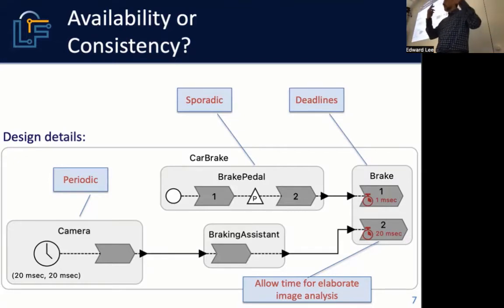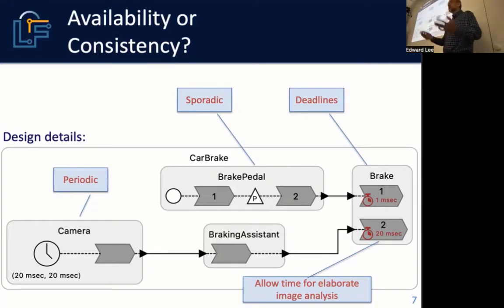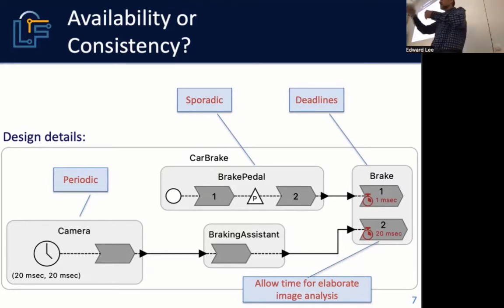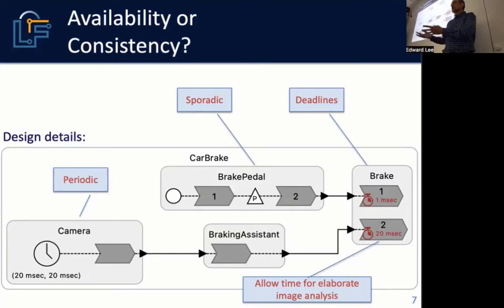You have to look at the dynamics of the car — the camera detection range, the maximum speed, the stopping distance — do all those calculations, and decide: maybe a 20-millisecond deadline is acceptable for the braking assistant.